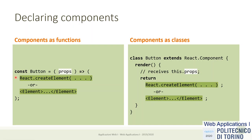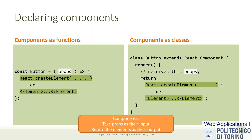You don't see a return statement here because I use the arrow function which by default returns the expression inside. You can also have a normal function with an explicit return statement — the idea is the same. The component gets some properties and returns some elements. Properties are the inputs of the component and elements are the output.